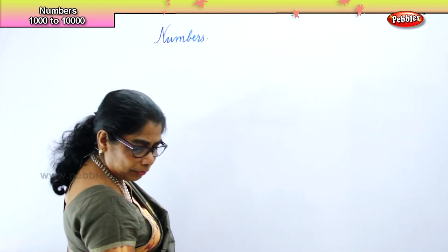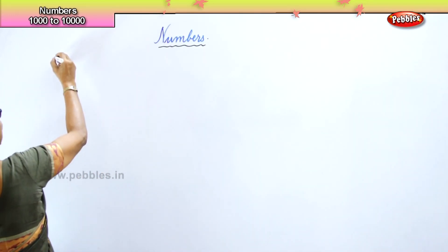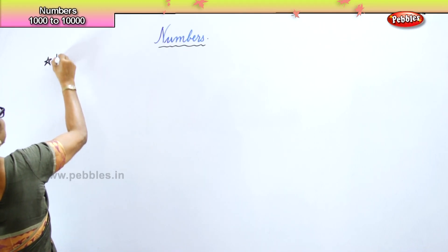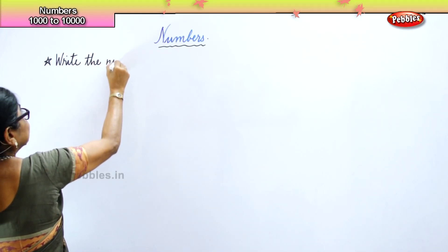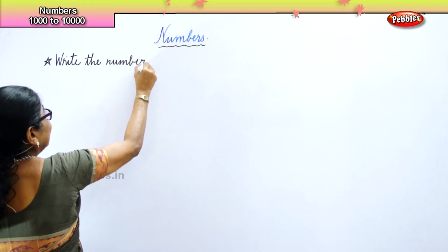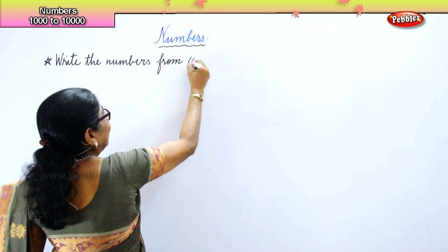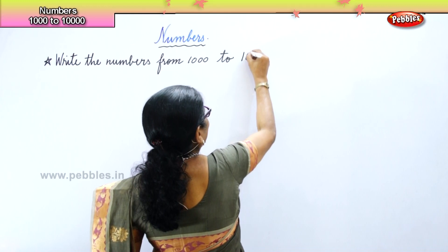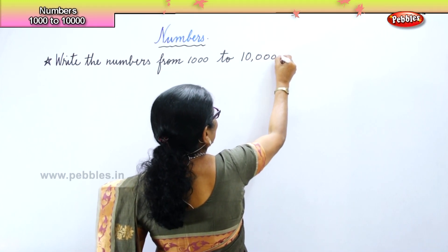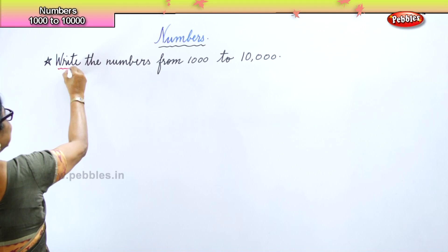You are looking at numbers in general from one thousand. Let us learn to write numbers from one thousand to ten thousand. We will begin with one thousand and go right up to ten thousand.